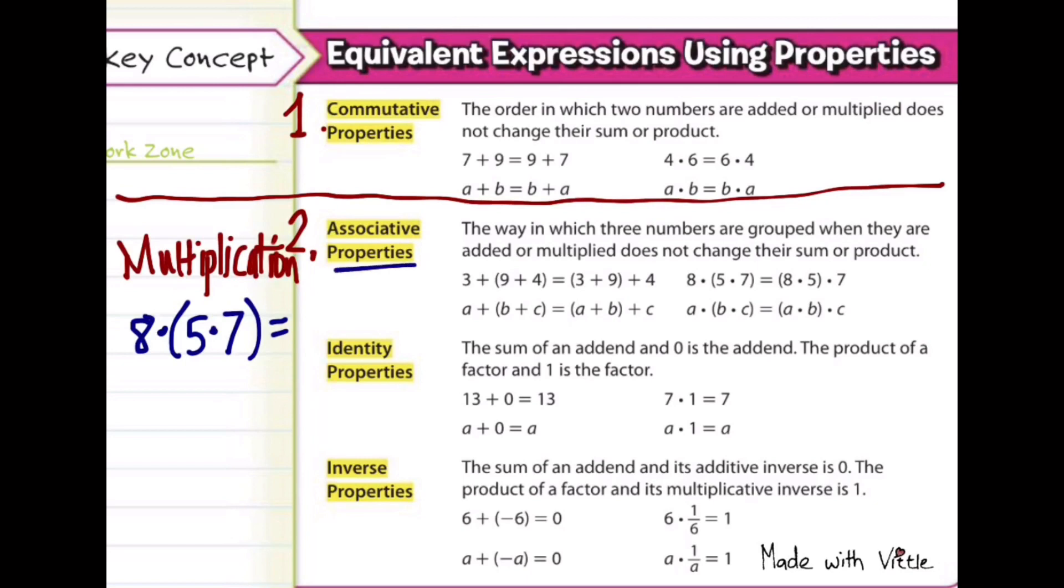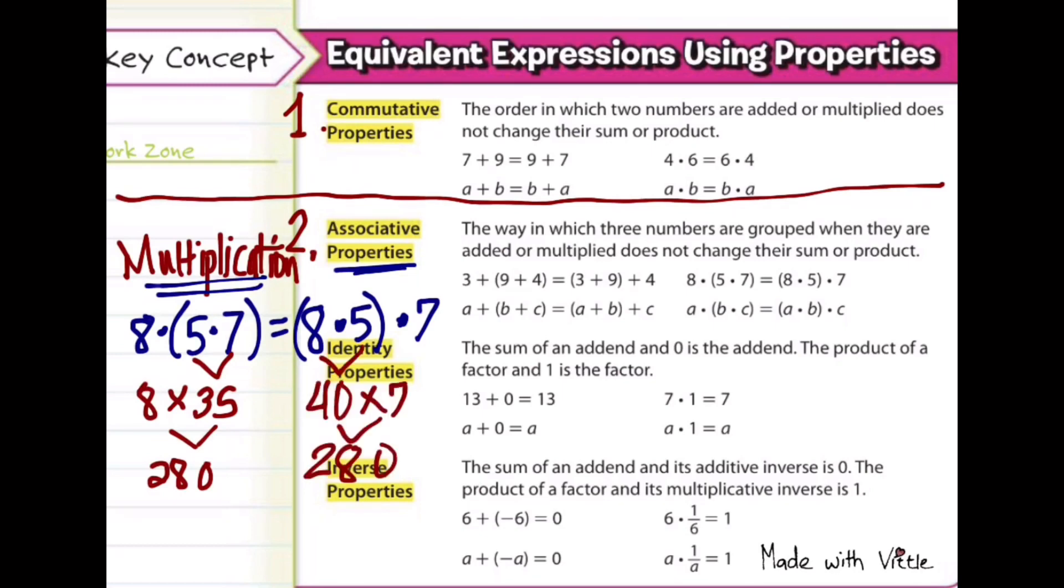So is associative property can be applied in multiplication? Definitely, because we're just multiplying the numbers. Now this time, 8 times 5 is inside the parenthesis. So these two expressions from the left side and the other expression on the right side, they are definitely equivalent to each other. Using the property, which is associative property.